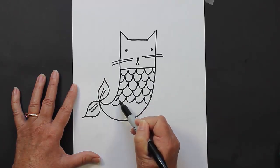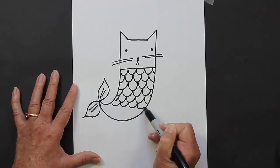And as you go down your mermaid tail, the scales get a little bit smaller. So they start out pretty big and then they get a little bit smaller as you get closer to the bottom of the tail.